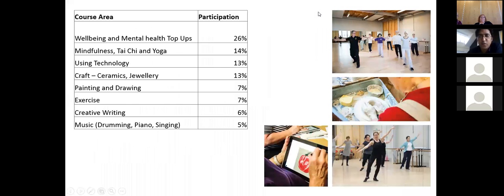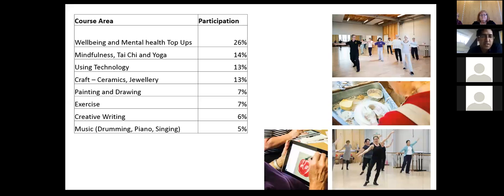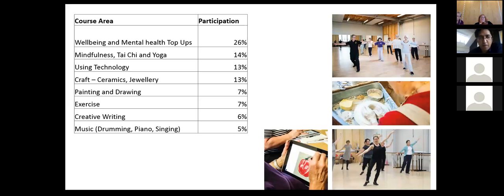A data slide shows the top eight course areas by participation. Well-being and mental health top-ups rank number one. Mindfulness, tai chi and yoga are also very popular. Using technology features prominently — some learners are anxious about it, so a gentle course covers overcoming technology anxiety using iPads in a closed environment before gradually building confidence. Craft — ceramics and jewellery — is very popular, along with painting and drawing, exercise, creative writing and music.